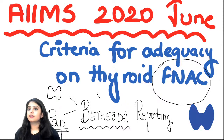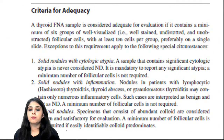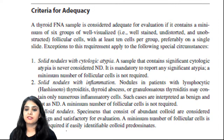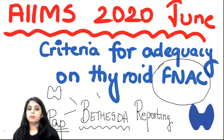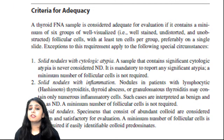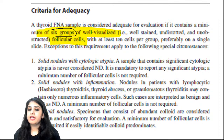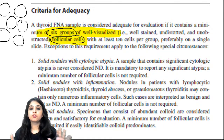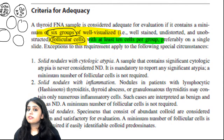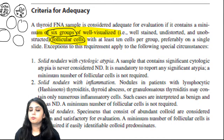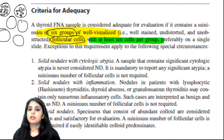From the Bethesda book directly: the adequacy criteria require you to see six clusters of well-visualized follicular cells, with each cluster having at least 10 cells. So six groups, each with a minimum of 10 cells. Is everyone clear? Six groups of follicular cells, at least 10 cells per cluster.